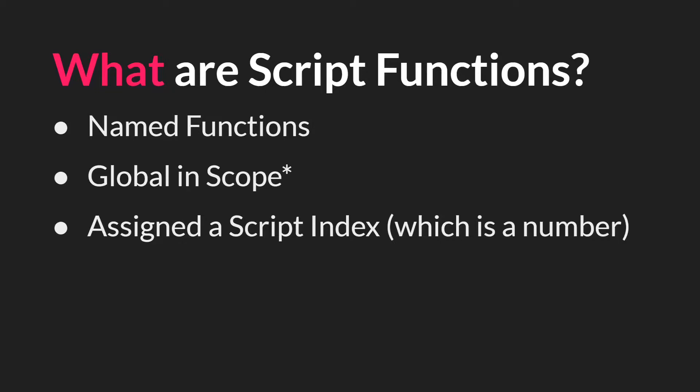Script functions are named functions, so hopefully you've watched the last tutorial on writing your own functions. In that tutorial, we talked about named functions. Named functions in GameMaker Studio 2.3 are called script functions. They are global in scope, sort of, which means that if you create a script function anywhere, GameMaker will recognize it as a script function everywhere. But there are some important caveats to this, which I'll talk about in a moment.